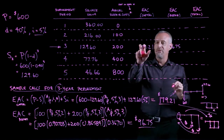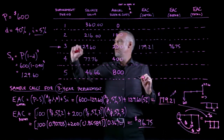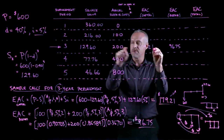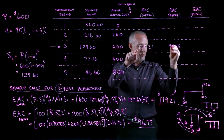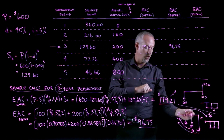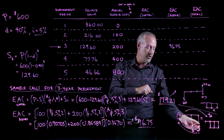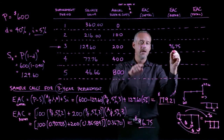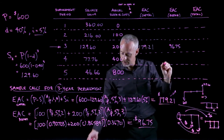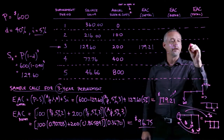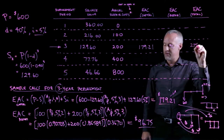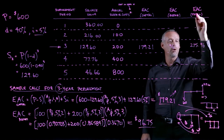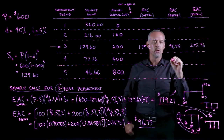Now that I've converted the purchase price and salvage value into an equivalent annual cost over three years ($179.21), and converted the repair costs — $100 in year two and $200 in year three — into an equivalent annual cost ($96.75), I add these two together and get $275.96 as the total equivalent annual cost for a three-year ownership cycle.